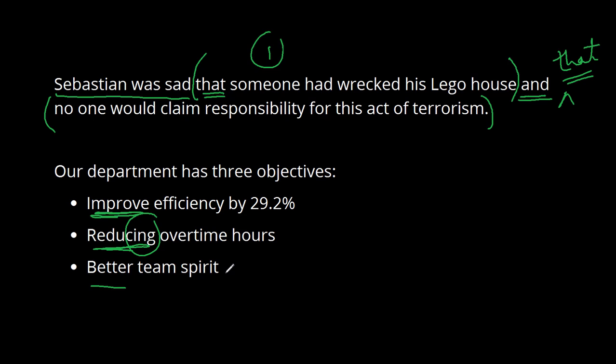So it's best if we can make them all the same, and it's up to you how you want to do that. In this case if you start with improve, maybe you could say improve efficiency, reduce overtime hours, and create team spirit. So use the verb create at the end. That's it for parallel structure. Hope you found this useful, and don't overdo it. If you have a very short sentence then you can often just slack off a little bit, and that's fine.